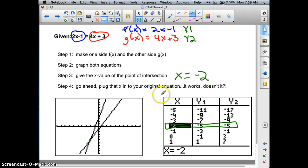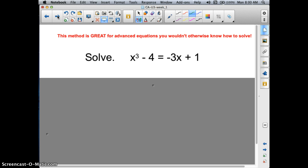Step 4 says to go ahead and plug that x into your original equation. Let's make sure it works. If you make x negative 2, if this is the correct solution, then this plugged in with a negative 2 for the x should absolutely come out to a true statement. Well, 2 times negative 2 is negative 4 minus 1 is negative 5. Let's look at the right side of the equation. 4 times negative 2 is negative 8 plus 3 is negative 5. Those are absolutely equal. My solution is correct. Now, it might be faster if you were doing this one by hand, but remember, there are more complicated ones. This method is fantastic for advanced equations that you wouldn't otherwise know how to solve.